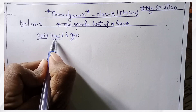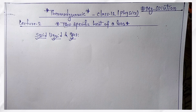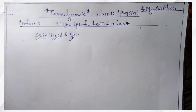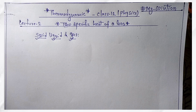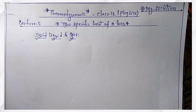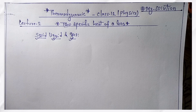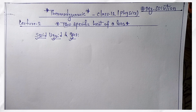Now, solid and liquid are fixed. What is fixed? We need to change the temperature in solid or liquid. The volume is fixed — so in solid or liquid, the volume does not change when temperature is changed.